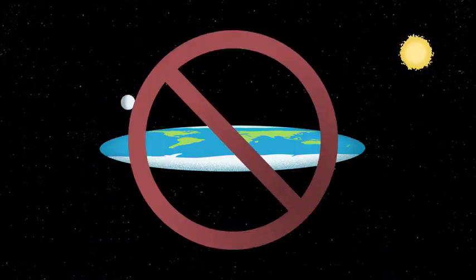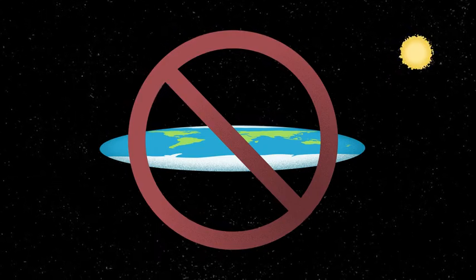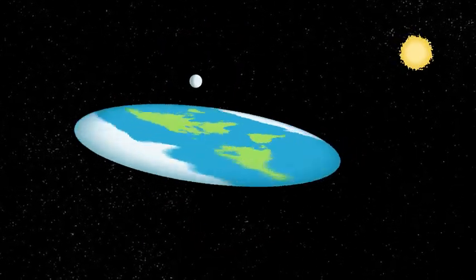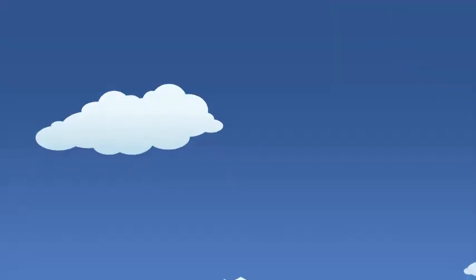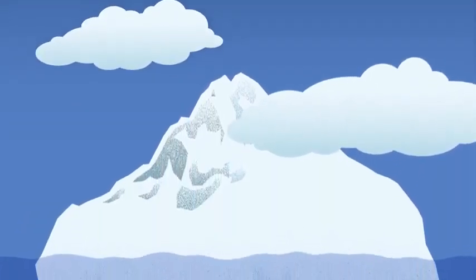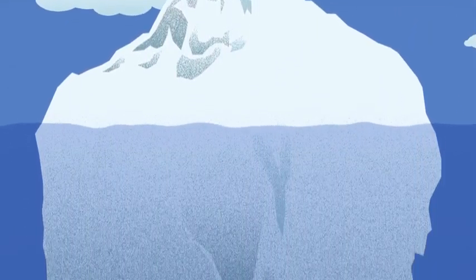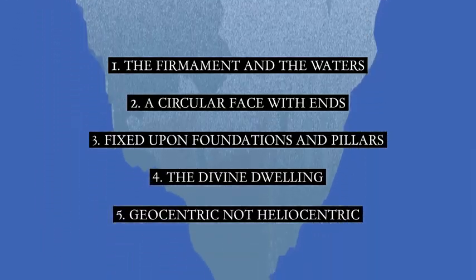This is not biblical cosmology. Such a conception is circulated by misinformation agents as a way to ridicule and discourage investigation of the subject. When it comes to how vastly different biblical cosmology is to the spinning space ball, an absence of curvature is just the tip of the iceberg. Here are five key aspects of biblical cosmology.